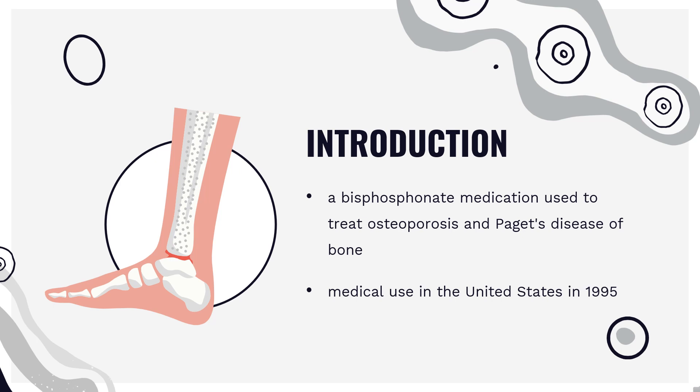Use is often recommended together with vitamin D, calcium supplementation, and lifestyle changes. Alendronic acid was first described in 1978 and approved for medical use in the United States in 1995. It is available as a generic medication. In 2020, it was the 94th most commonly prescribed medication in the United States, with more than 7 million prescriptions.